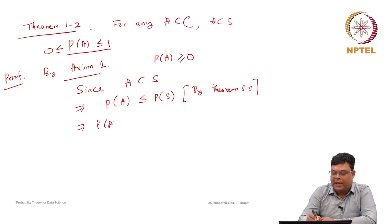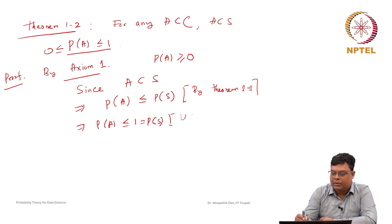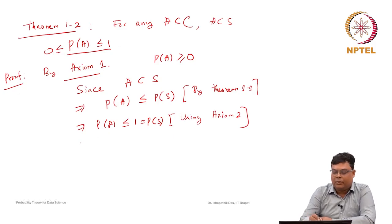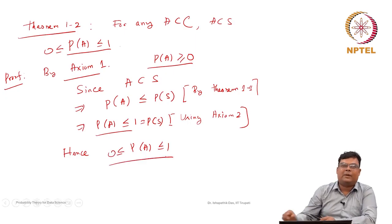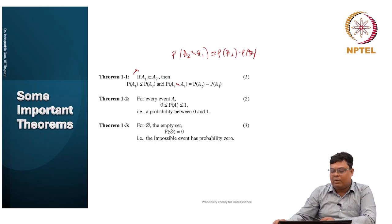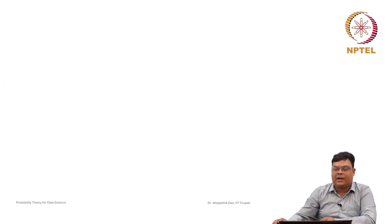These are very straightforward proofs. Next, Theorem 1.3 says that for the empty set, P(φ) = 0, because this was not mentioned in the axioms so we must prove it. Since φ is in C, it is an event. To prove P(φ) = 0, consider S and φ as two events. Since S intersection φ = φ, by Axiom 3, P(S union φ) = P(S) + P(φ).